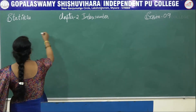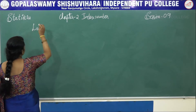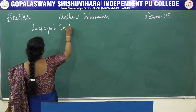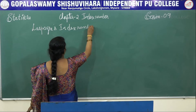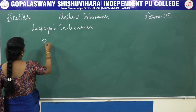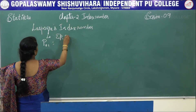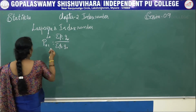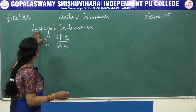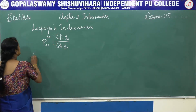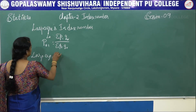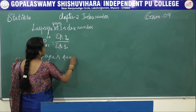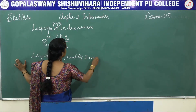The first method is Laspeyres. The Laspeyres price index number formula is: P01(LA) = summation of P1×Q0 divided by summation of P0×Q0. This is the Laspeyres price index number.